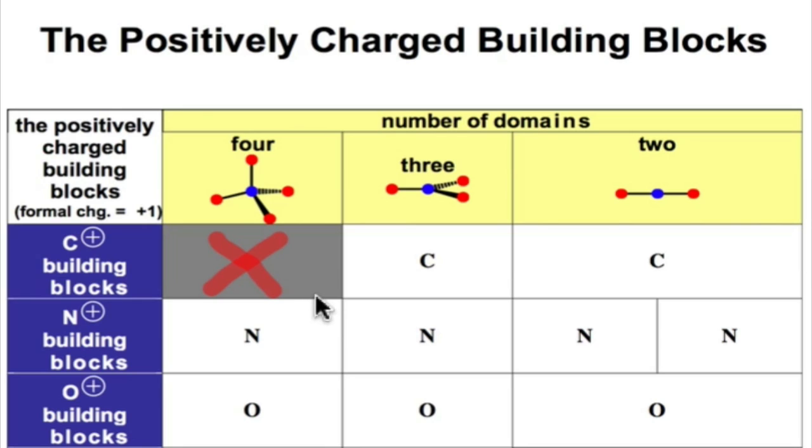But we can move over to the 3 electron pair domain case. And in this example, we have 3 single bonds that make up the structure of the carbocation that's shown here. It is an exception to the octet rule, and we need to always remember that. That's what makes it such a reactive intermediate.